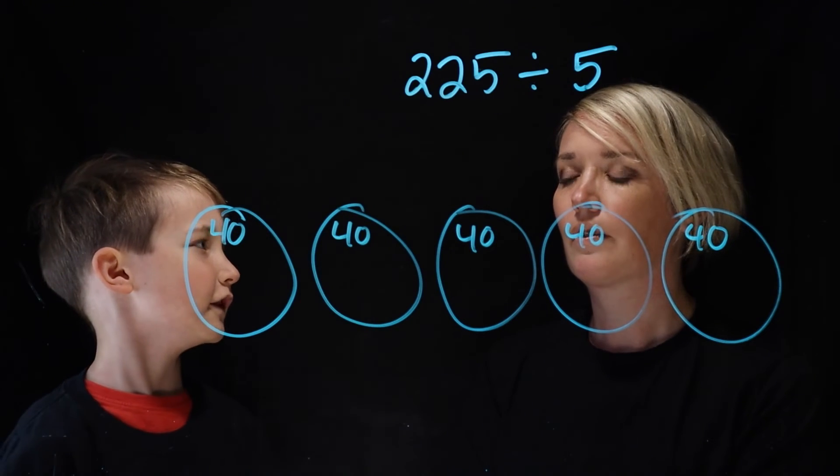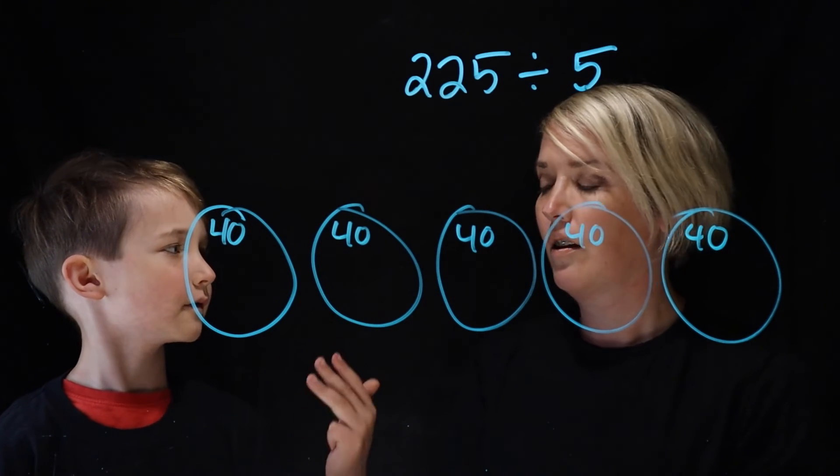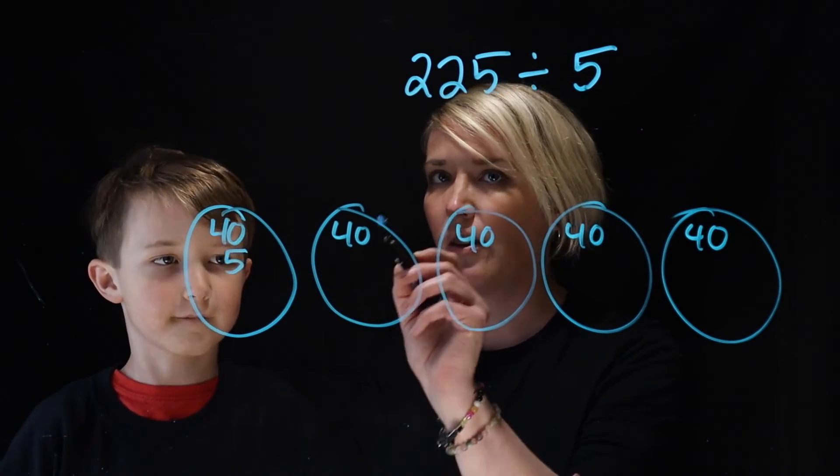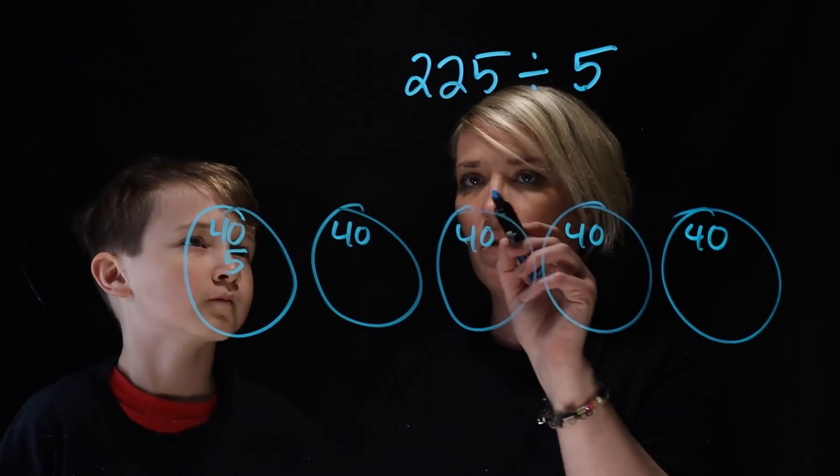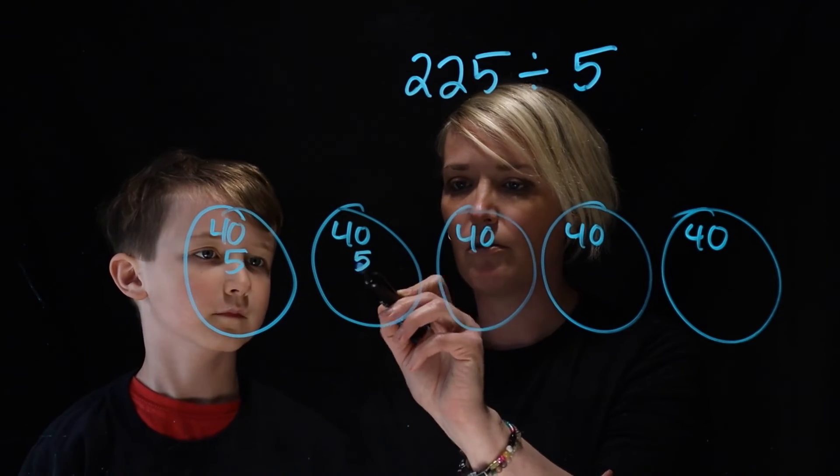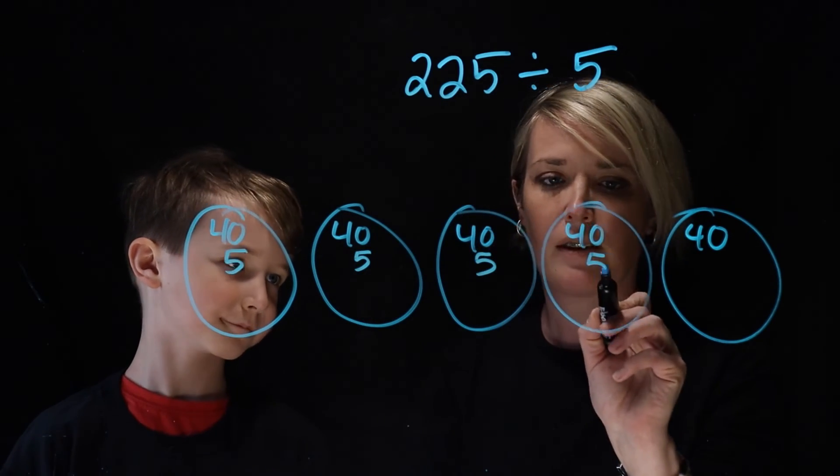So let's try 5 times 5: five, ten, fifteen, twenty, twenty-five. Okay, so you just want to add another 5 because the 40s took care of 200 and now you're just going to do another 5 in each one.